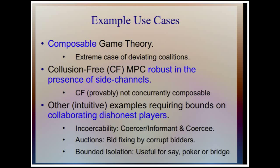Moreover, other intuitive examples where you'd like to bound the capabilities of collaborating dishonest players include capturing incoercibility. Intuitively, if we can bound the communication between a coercee and an informer, the informer may not be able to tell whether the coercee is complying. Also, we might want auctions where we can avoid bid fixing, maybe some kind of bounded isolation — for example, implementing poker or bridge so the protocol doesn't allow people to show their cards to each other and gain an unfair advantage.